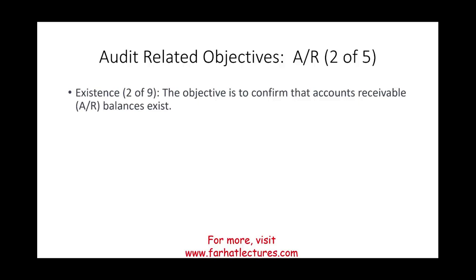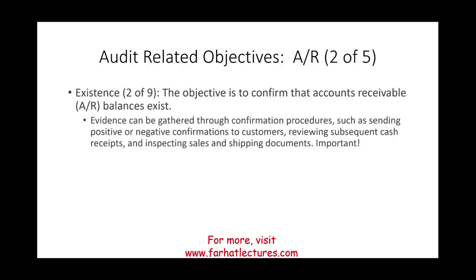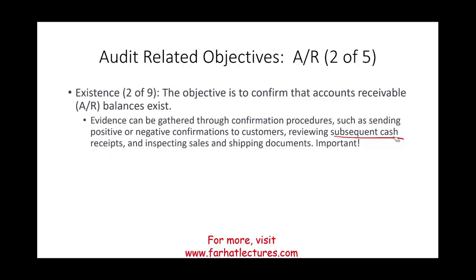The second objective is existence, and this is one of the most important ones. The objective is to confirm that the account receivable balance actually exists — that it's not a fictitious one. Evidence can be gathered through confirmation procedures, such as sending positive or negative confirmations to customers, reviewing subsequent cash receipts, and inspecting sales and shipping documents. We're going to have a whole session dealing with positive and negative confirmations. The concern is: if the account receivable is fictitious, so is the sale — and sales pose a significant fraud risk.